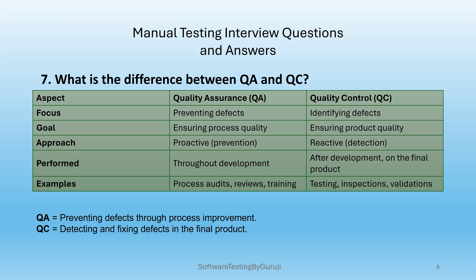QA stands for Quality Assurance and QC stands for Quality Control. QA focuses on preventing defects; QC focuses on identifying defects. QA's goal is ensuring process quality; QC's goal is ensuring product quality. QA's approach is proactive; QC's approach is reactive. QA is performed throughout development; QC is performed after deployment on the final product. QA examples include process audits and reviews; QC examples include testing, inspection, and validation. In simple words, QA is about preventing defects through process improvement, and QC is about detecting and fixing defects in the final product.